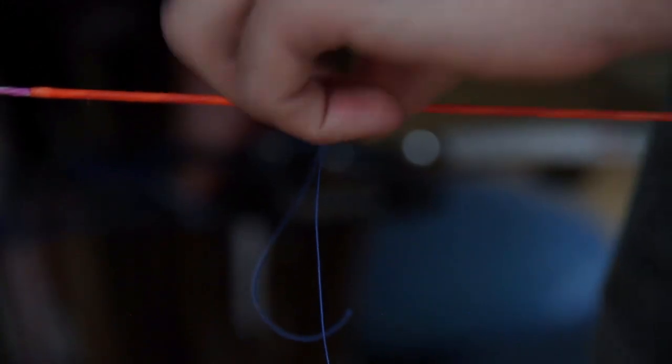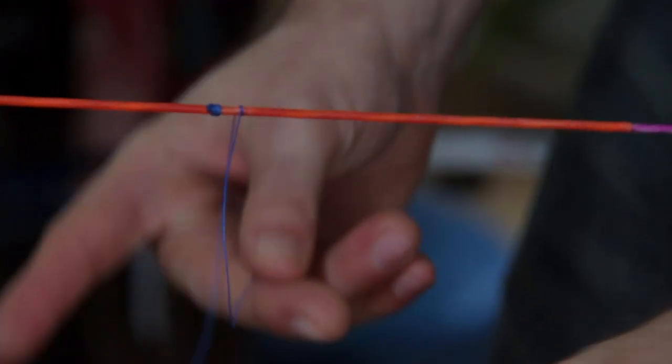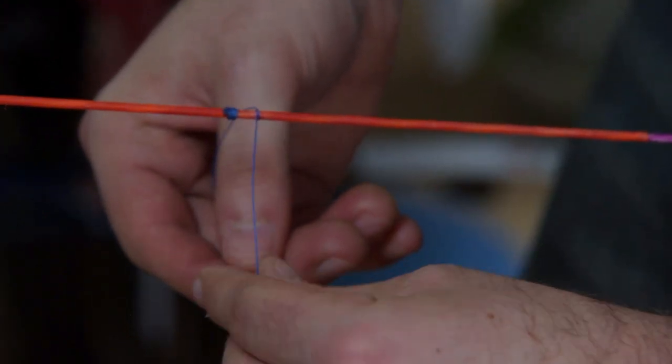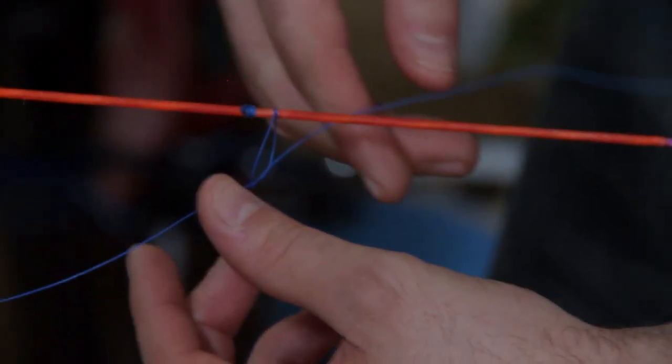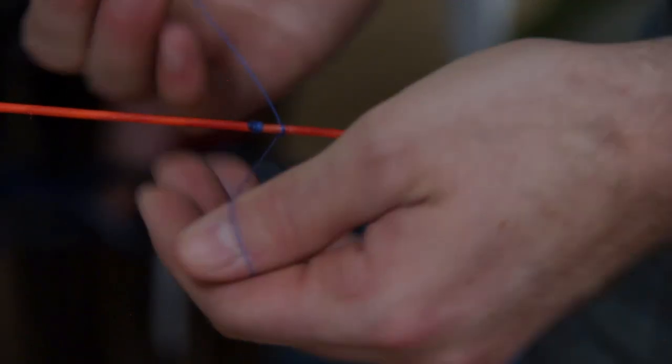We are going to do the other portions of it. So this is the top side it is done. You are going to do exactly the same thing. So cross them, loop one of the strings through, pull evenly, nice smooth. Pull evenly, tight again.